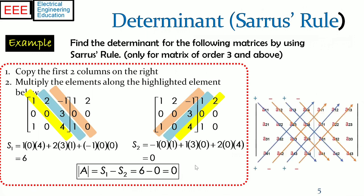Generally, for an n by n matrix determinant, the first n minus 1 columns are copied and the operations are performed for full diagonals.